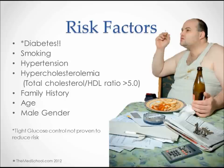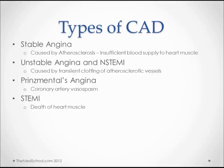Smoking is the biggest preventable risk factor. Hypertension is something that we can control, hypercholesterolemia we're getting better at, and then of course family history, age, and gender are risk factors as well. The main types of coronary artery disease include stable angina, which is caused by atherosclerosis.